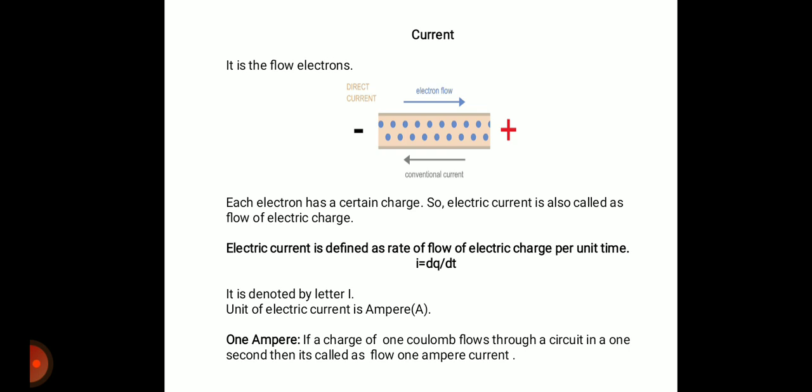Current is denoted by letter I and measured in ampere. One ampere means a charge of one coulomb flows through any circuit in one second. If a charge of two coulombs flows in one second, it is two ampere. That is the basic understanding of current.